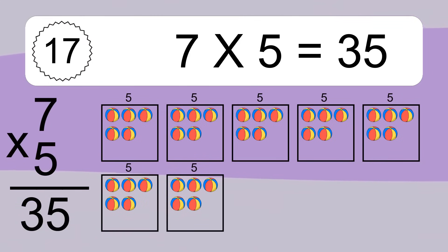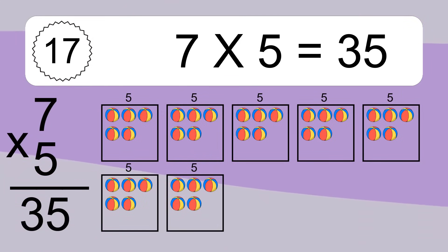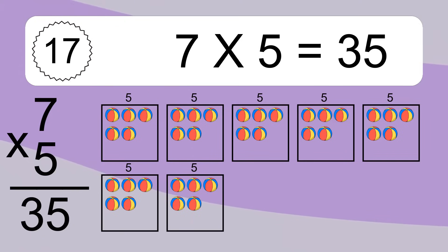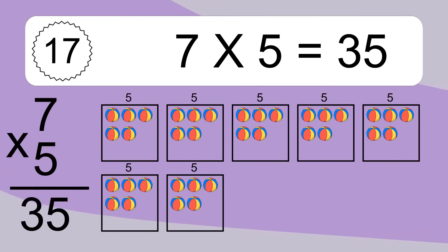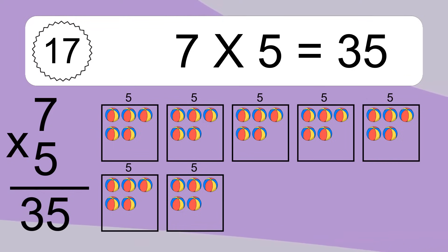7 times 5 equals what? We have 7 boxes and each box has 5 colorful balls inside. If you count all the balls in all the boxes together, you will have 7 times 5 balls. This equals 35 balls.